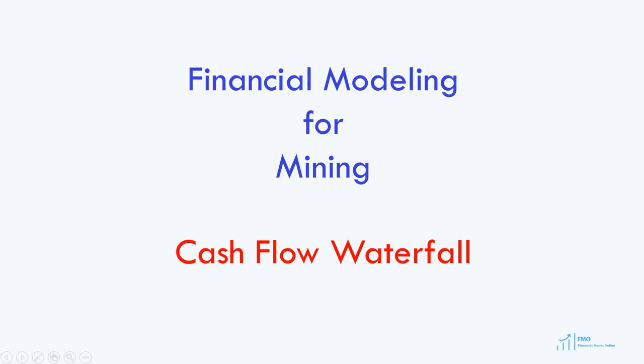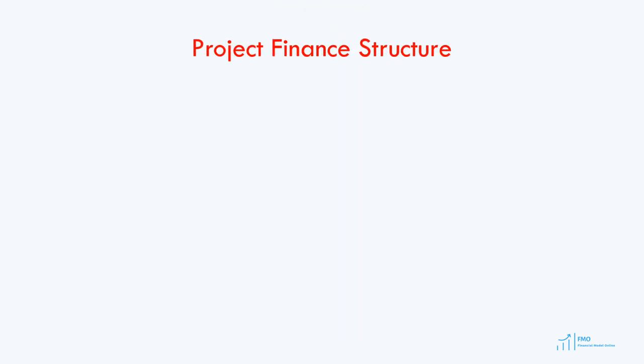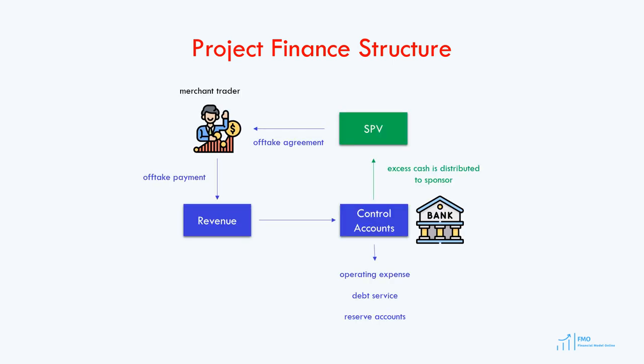In this lesson, we will discuss the cash flow waterfall in project finance transactions. In a typical project finance transaction, the lenders rely heavily on the cash flow generated by the project for repayment of the loan. As a result, the lenders will impose strict restrictions on how the project company uses its cash. Project finance lenders manage the flow of cash through the project by means of the cash flow waterfall or payment cascade.